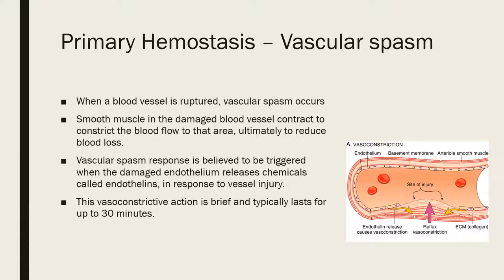When a blood vessel is ruptured, vascular spasm occurs. Vascular spasm is a vasoconstriction of the damaged blood vessel — the smooth muscle in the blood vessel contracts to constrict blood flow to that area, ultimately reducing excessive blood loss. However, this is a brief action and typically only lasts about 30 minutes. It is believed to be triggered by chemicals called endothelins, released by the damaged endothelium in response to vessel injury.